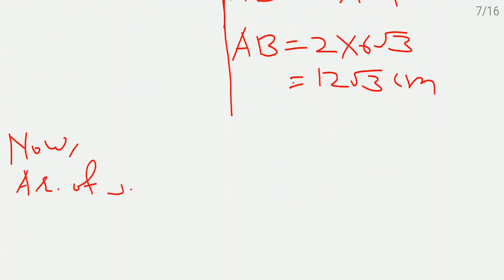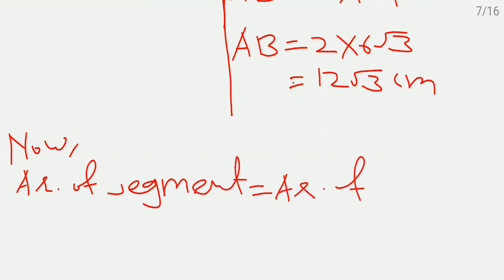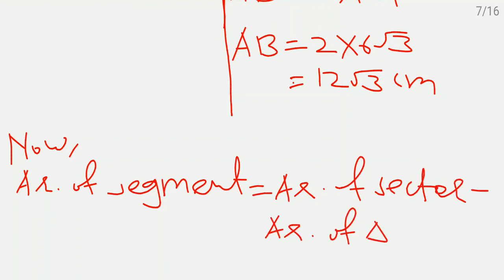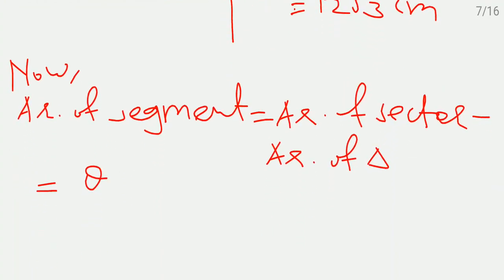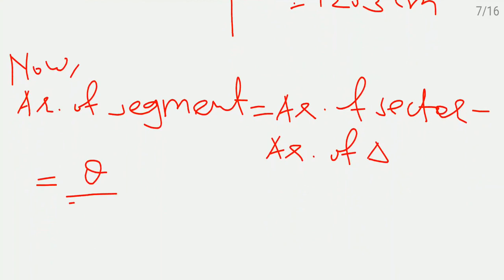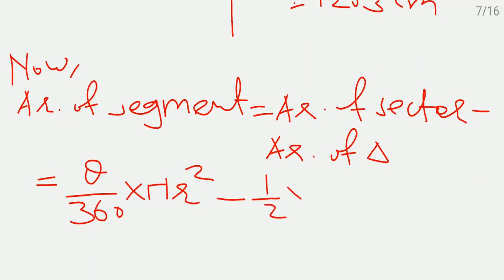Area of the minor segment equals area of sector minus area of triangle. The formula for area of sector is theta by 360 into pi r square, and area of triangle is 1 upon 2 times base times height. We substitute the values.